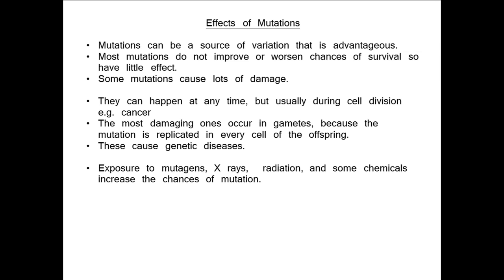Always remember that most mutations are neutral and don't have a positive or negative effect. Some mutations can be negative and lead to diseases like cancer — specifically when cells divide. A cancerous cell is one that has had a mutation, and a sign of a cancerous cell is that it reproduces rapidly and doesn't function properly, which is why cancers can appear all over the body. Another common type of mutation can occur in gametes and lead to certain genetic diseases. We can also cause mutations by exposure to mutagens, such as X-rays, radiation, and some chemicals like alcohol and drugs, which can increase the likelihood of certain cancers or mutations.